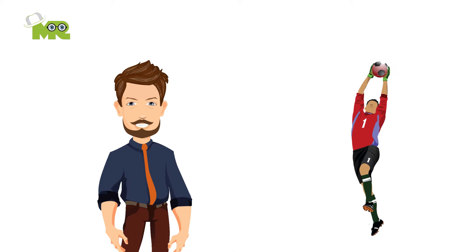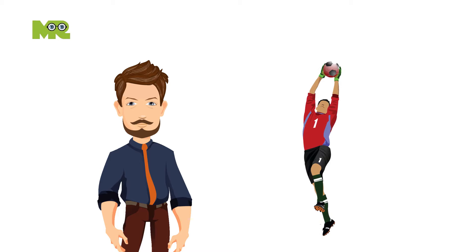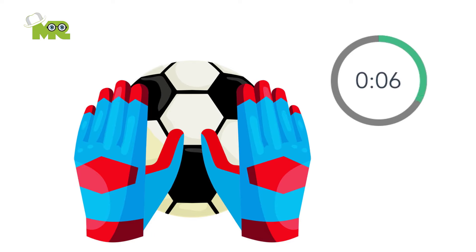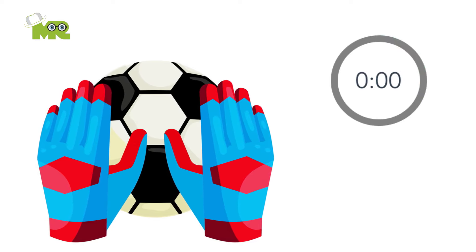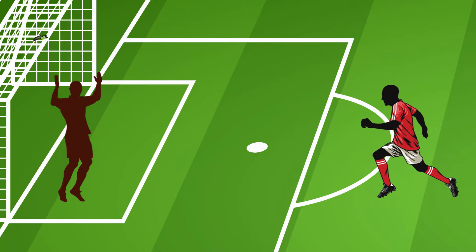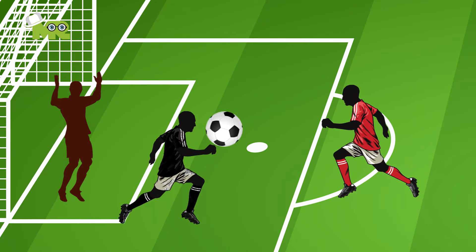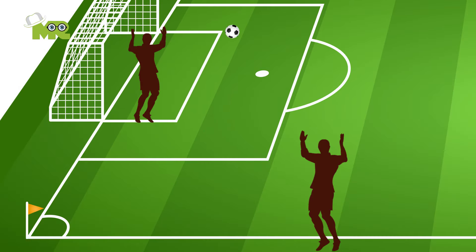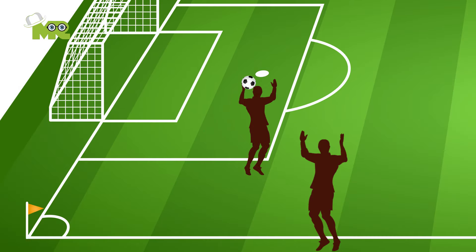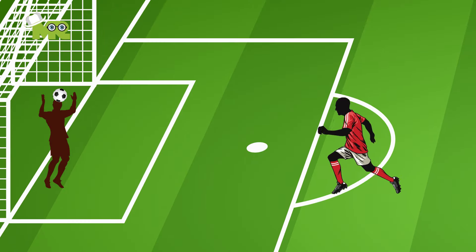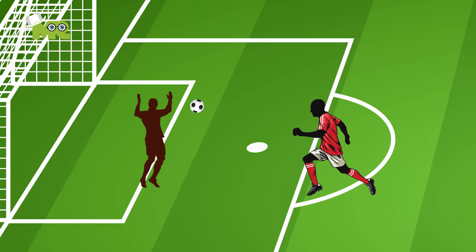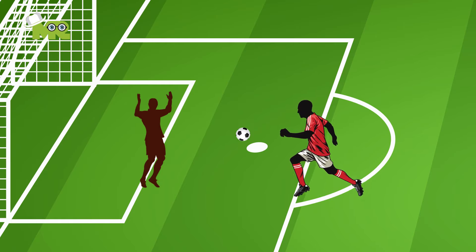The second category of foul is for the goalkeeper only. 1. If a goalkeeper keeps controlling the ball with his hands for more than 6 seconds before releasing it from his possession. 2. Touching the ball with hands after it is deliberately kicked to the goalkeeper by a teammate. 3. Touching the ball with his hands after he has received it directly on a throw-in from a teammate. 4. If a goalkeeper intentionally touches the ball with his hands after he has released it from his possession and before it has touched another player.